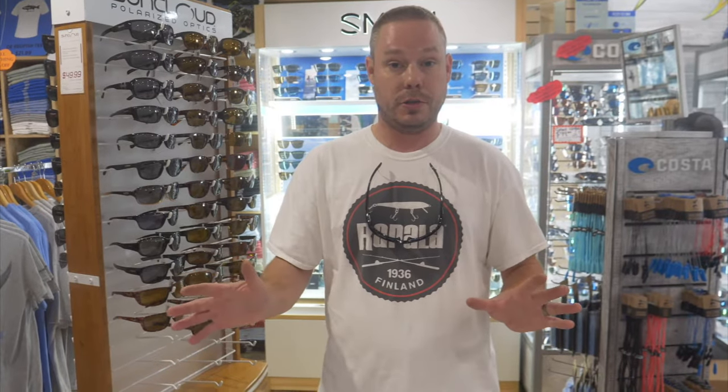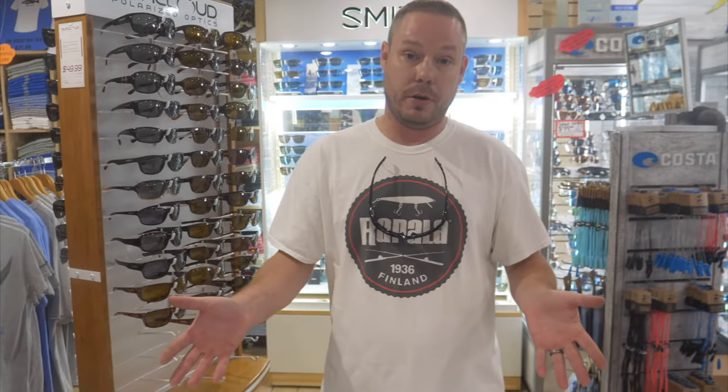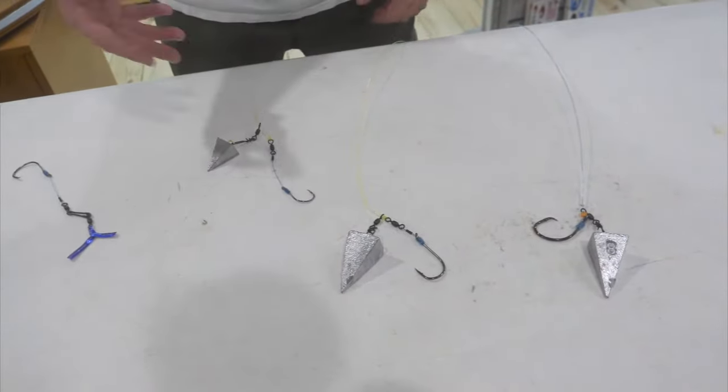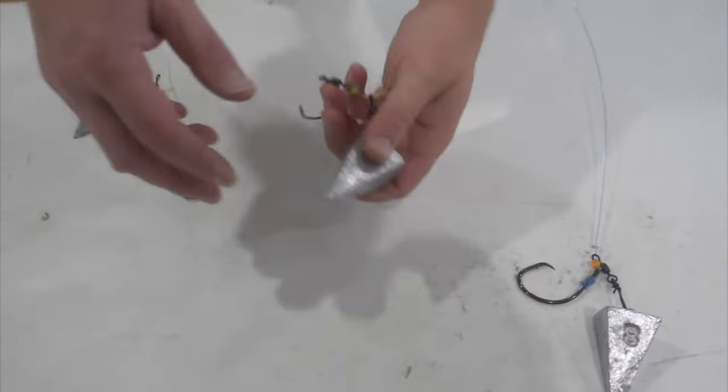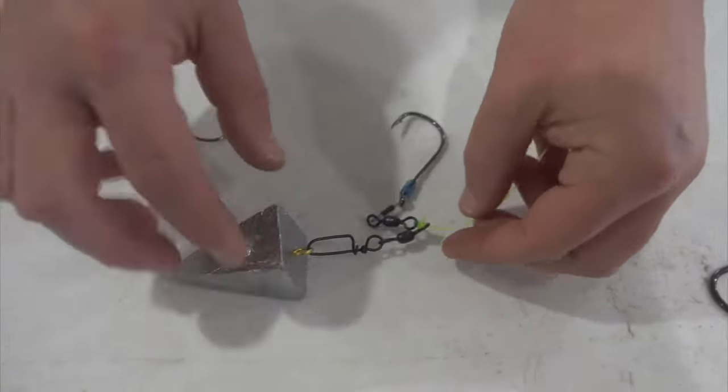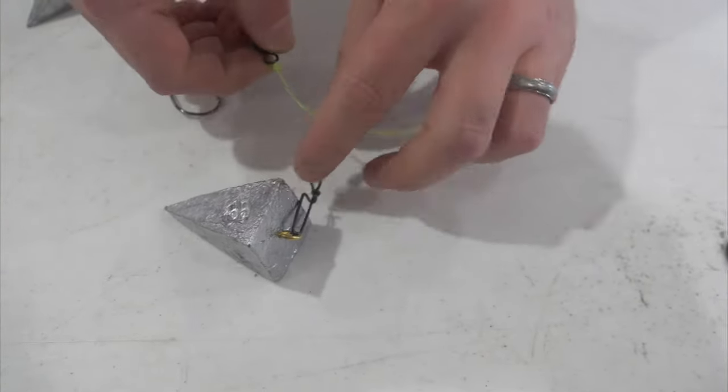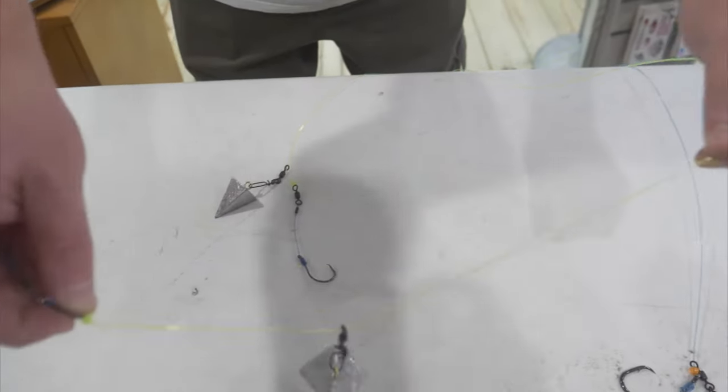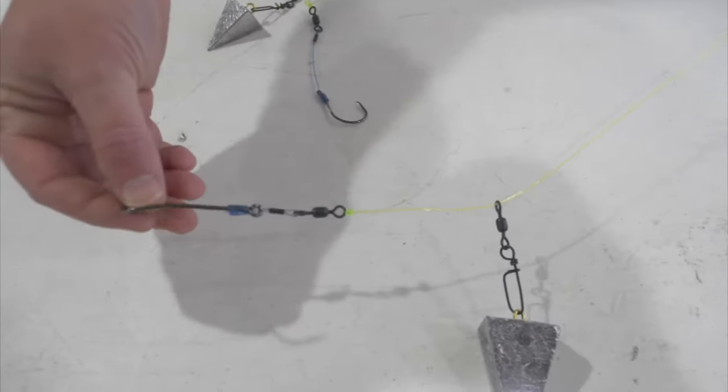We're just going to go through a rundown of some of the different rigs that you can potentially use to catch the drum, especially off the piers and off the beach. The first thing when looking at these drum rigs is they're all going to have some of the basic components: a sinker, some form of slide that allows that sinker to slide, and then a rig at the end.